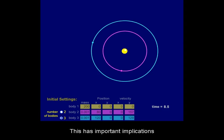This has important implications in explaining apparent retrograde motion that was one of the key motivations in the development of the heliocentric model of the Solar System.